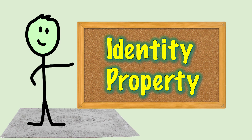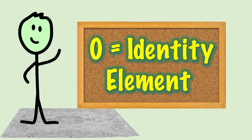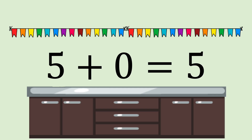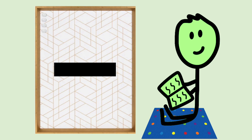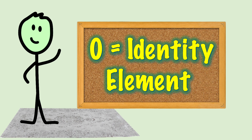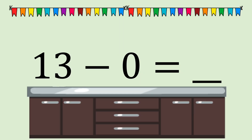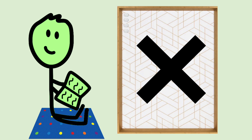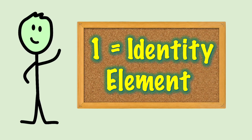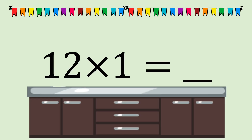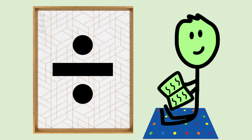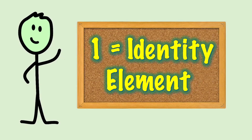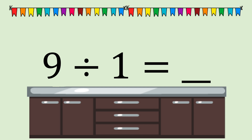Each operation has an identity property. Zero is called the identity element in addition — anytime zero is added to any number, that number does not change. Zero is also the identity element in subtraction — anytime zero is the subtrahend in a subtraction number sentence, the difference is the same as the minuend. One is the identity element of multiplication — any number multiplied by one gives us the original number. And one is the identity element of division — any dividend divided by one will always give us the same number.